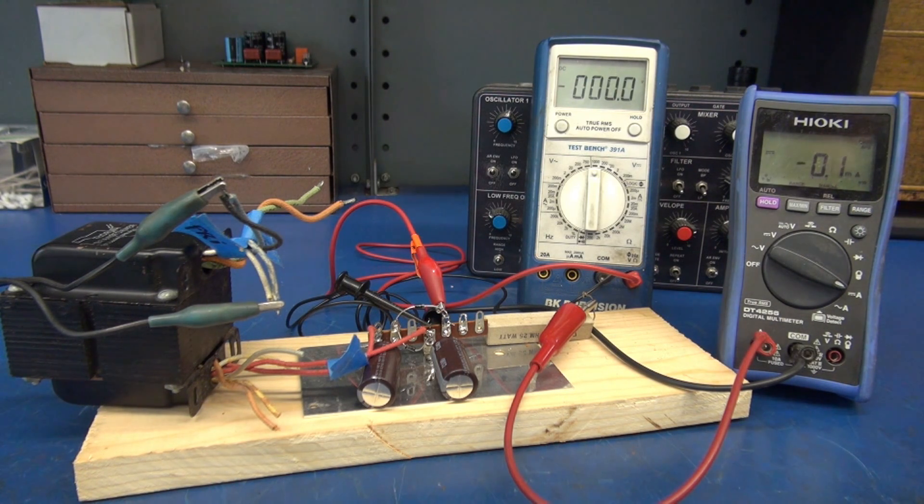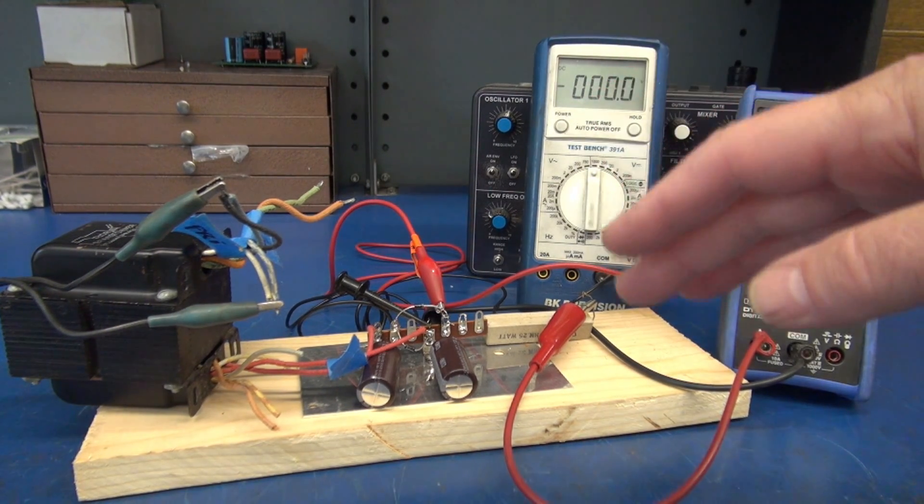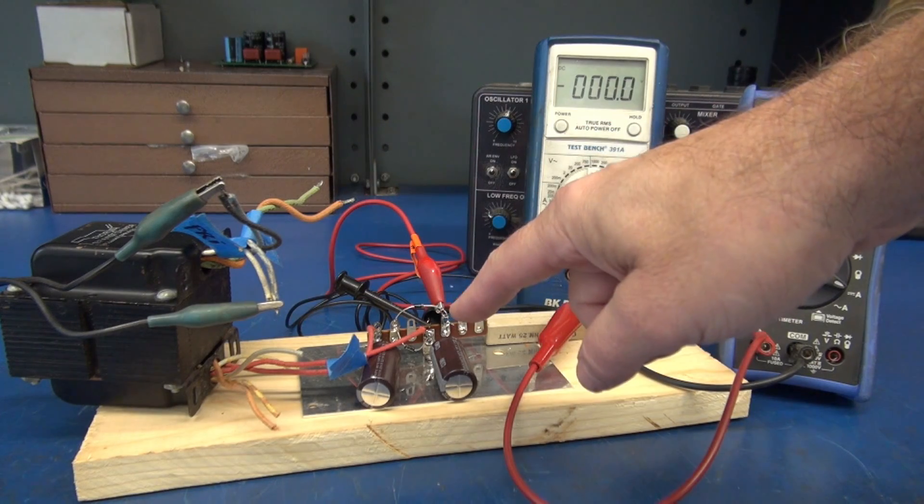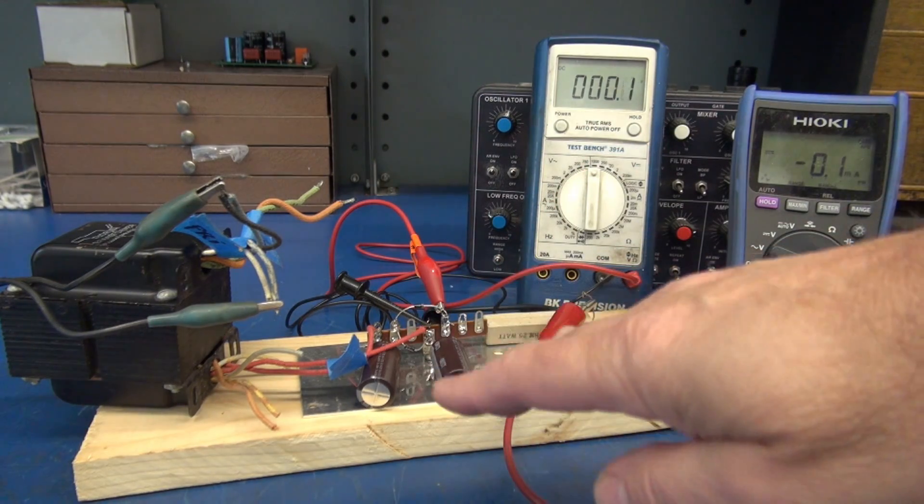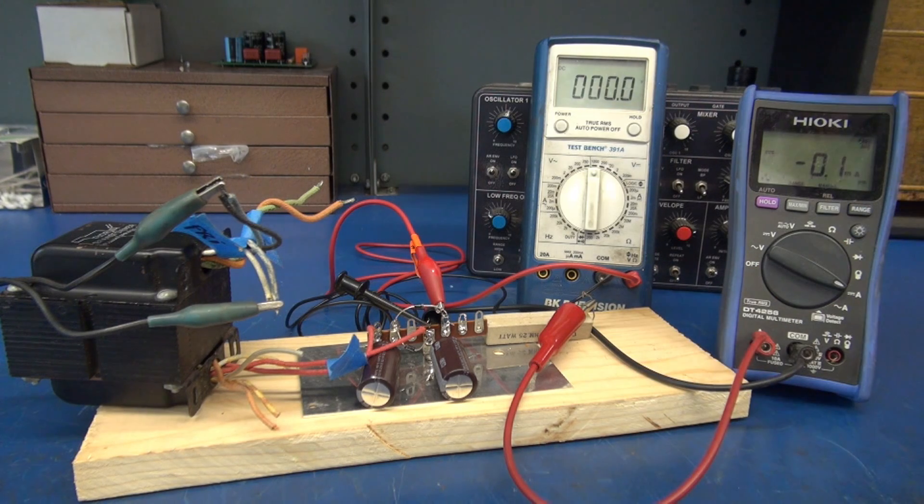All right, so I'm going to fire this thing up and you can see the voltage doubler at work. I'm going to apply power to the transformer. It's going to output 115 volts AC and we are going to voltage double that and rectify it to DC.